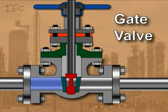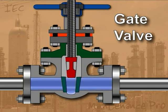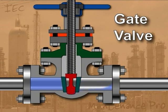Gate valves are one of the more common types. They operate by moving a gate or wedge in and out of the path of the process flow. Gate valves are typically designed to operate fully opened or fully closed. This type of valve is used where flow rates are not restricted.